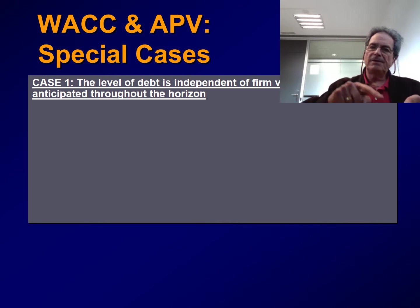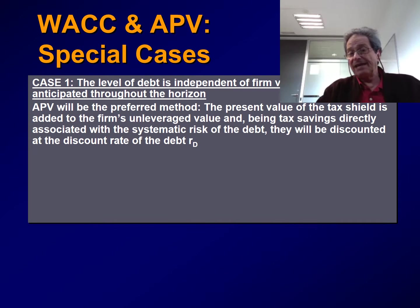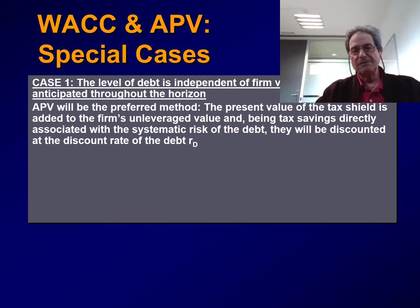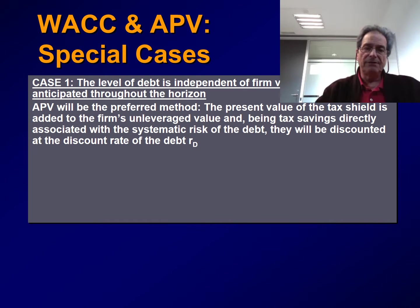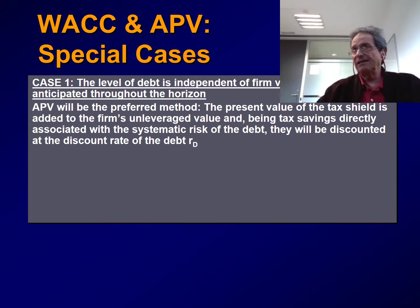In this extreme case, APV is the best method, because the present value of the tax shield is added to the firm's unleveraged value and treated apart. The unleveraged value of the firm is simply the present value of the unleveraged free cash flows after taxes, discounted at the rate corresponding to the unleveraged firm. And the present value of the tax shield is calculated using the discount rate for the debt, because the only determining factor of the tax shield is the cost of debt, since the debt itself is determined by management.